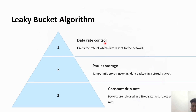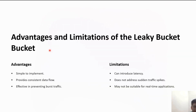Data always leaves the queue at the same rate, which helps to control the data rate by limiting the rate at which data is sent on the network. The packets are temporarily stored in a virtual bucket, and they are released at a fixed constant rate. The main advantages of this method are that implementation is easy, it provides a constant data flow, and it helps in effectively preventing burst traffic.